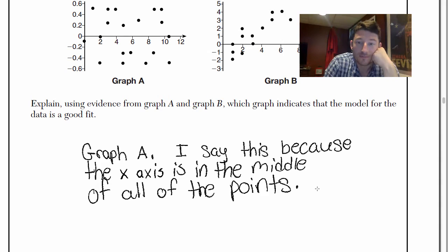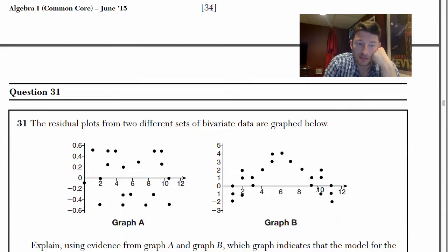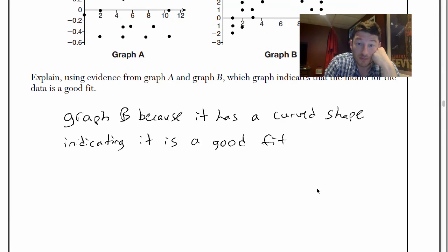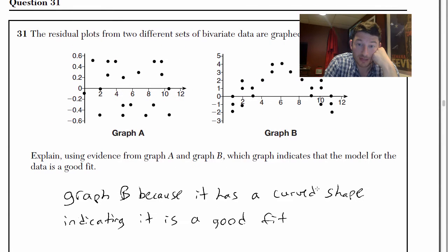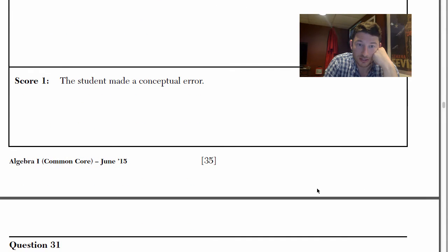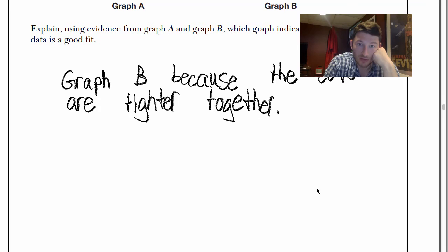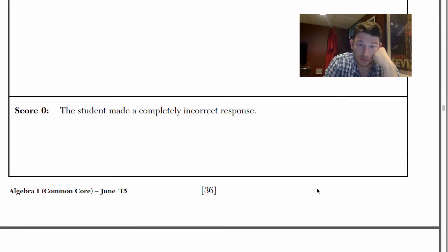Now we're starting to get a little more vague and it didn't compare. The one thing this one didn't do, it didn't compare the two graphs. Alright, let's look at someone who got this one, got a 1. Graph B because it has a curved shape indicating it is a good fit. That's not necessarily true.